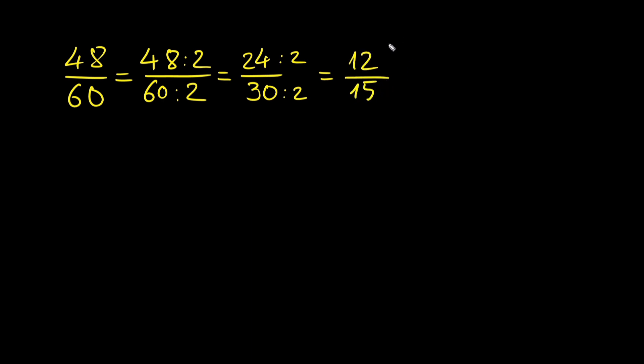Now 15 is not an even number, so we cannot divide by 2 anymore. But both 12 and 15 are divisible by 3. 12 divided by 3 is 4. 15 divided by 3 is 5. So the answer for this example is 4 over 5.